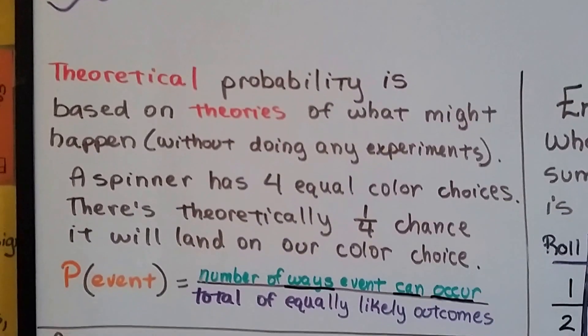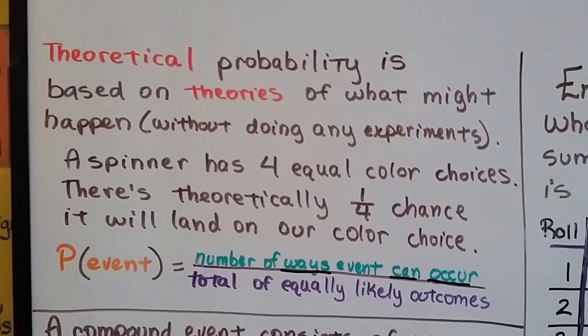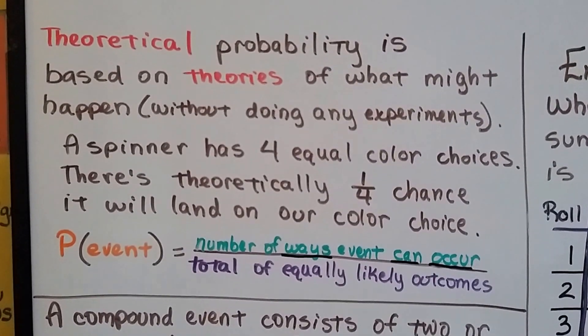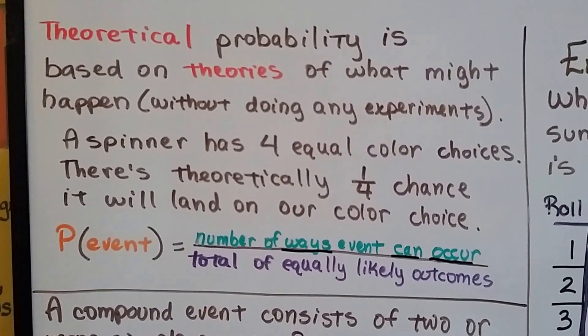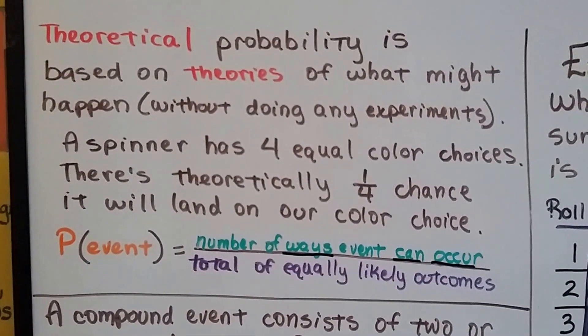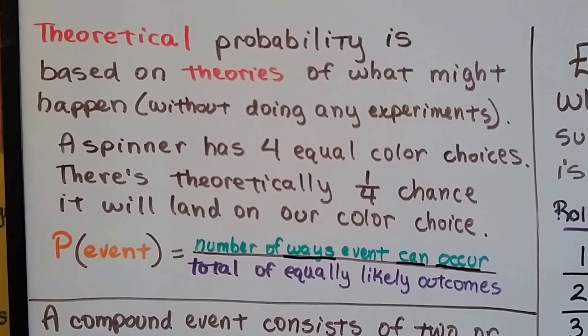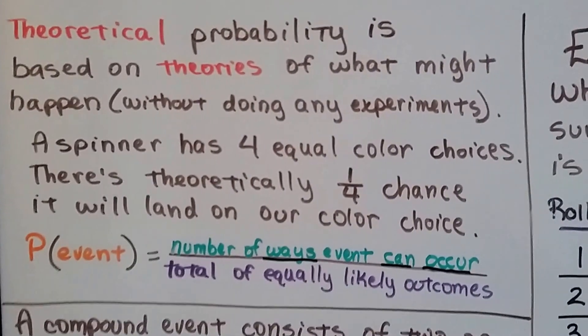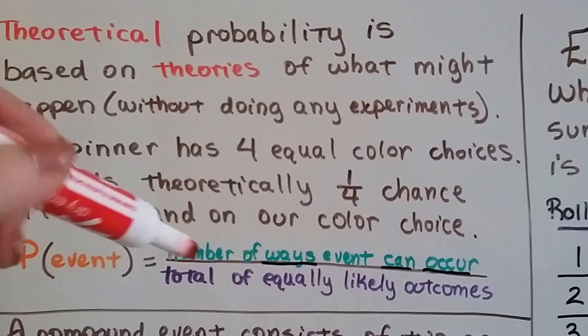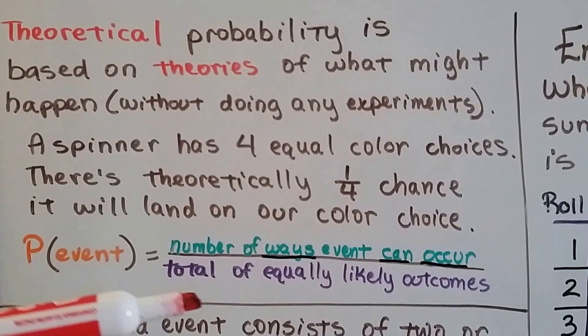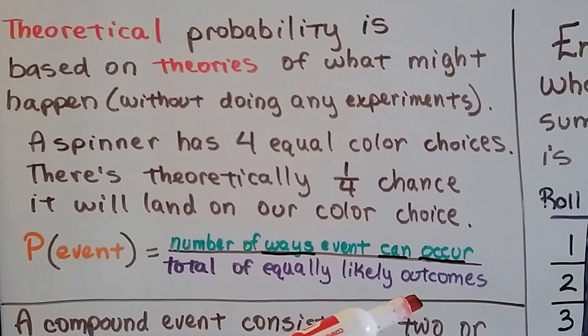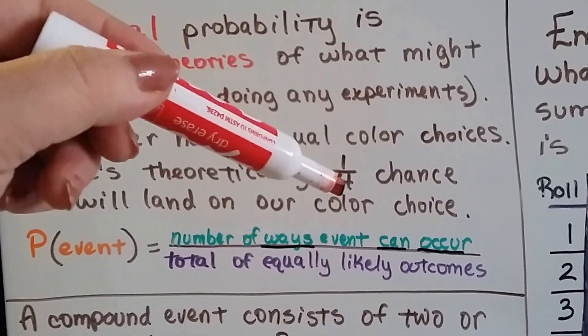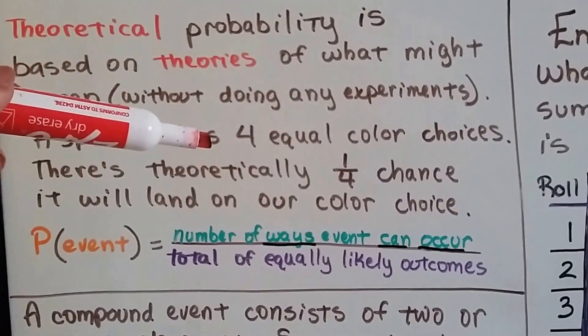Theoretical probability is based on theories of what might happen without doing any experiments. If a spinner has four equal color choices, there's theoretically a one-fourth chance it'll land on our color choice. The probability of the event equals the number of ways the event can occur over the total of equally likely outcomes. So if we want blue, we've got a one-in-four chance that it'll land on blue because there's four colors.